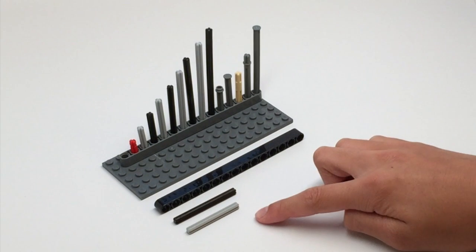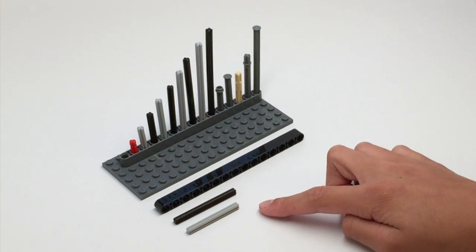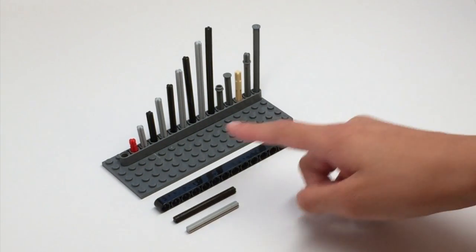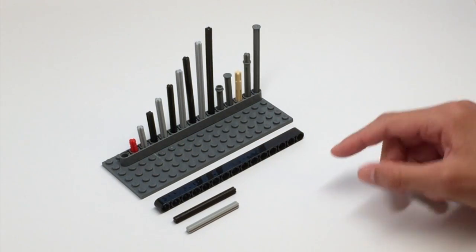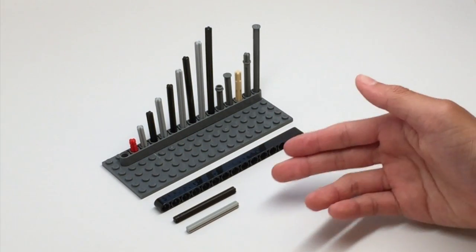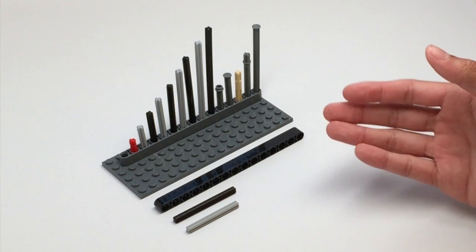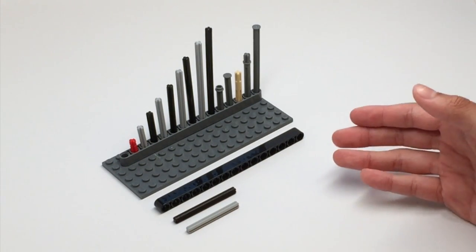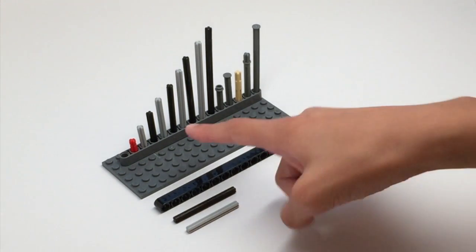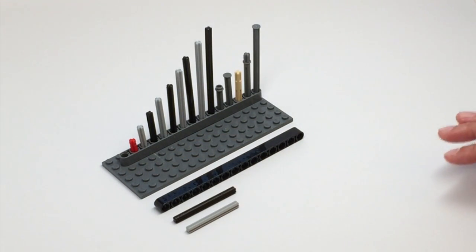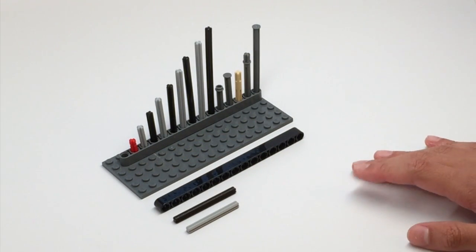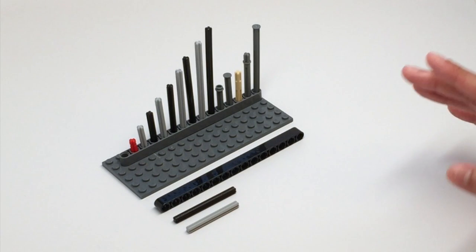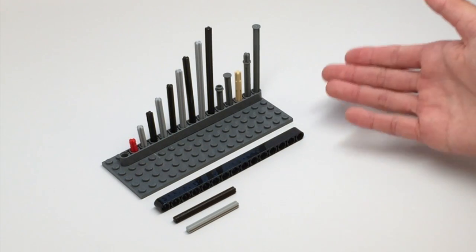If you notice, all the regular axles, all the black axles, have an even hole length, and all the odd hole length axles are a light gray, except for the little red length two axle. That's kind of like an exception. Now we can move on to special axles.